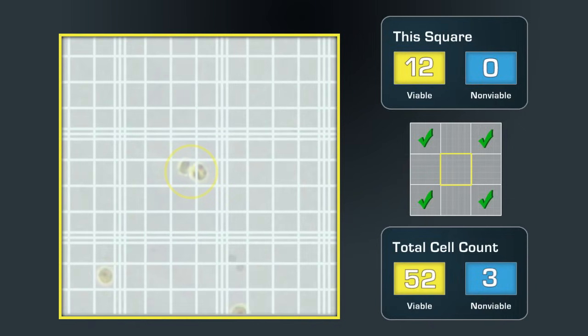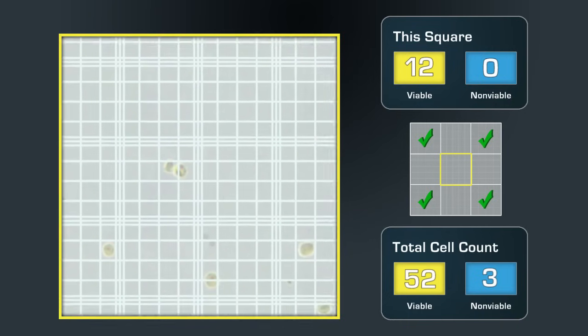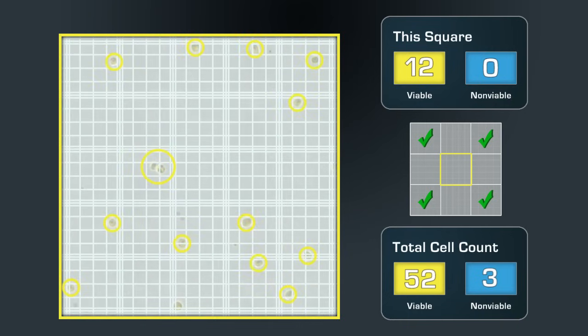Sometimes cells will appear as clumps or small groups. It may be difficult to determine exactly how many cells are in a group. The method of counting clumps of cells differs from lab to lab, so be sure to follow the procedure in your lab. We will count this clump as two cells.